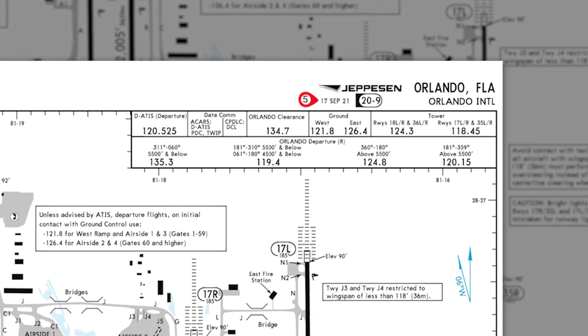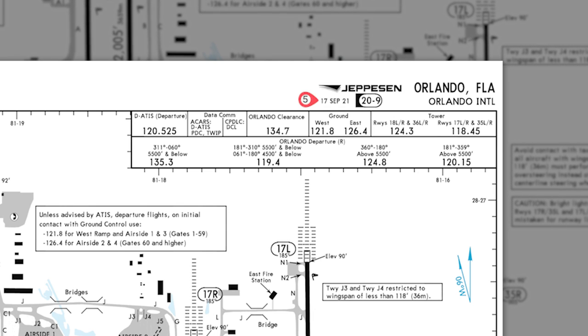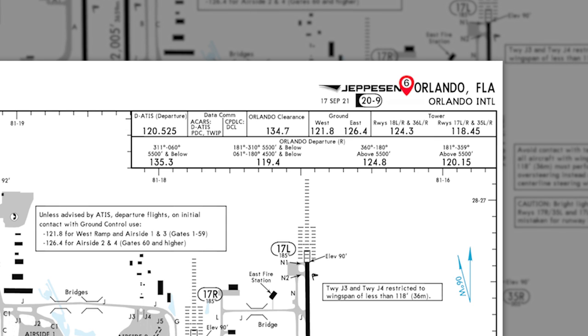Number five is the chart revision date: 17 September of 21. Number six behind me is blank, but if there was a date in there it would be the effective date of the chart. So the two dates could be confusing — we have an issuance date or revision date, and we have an effective date. What's the difference between the two of them?